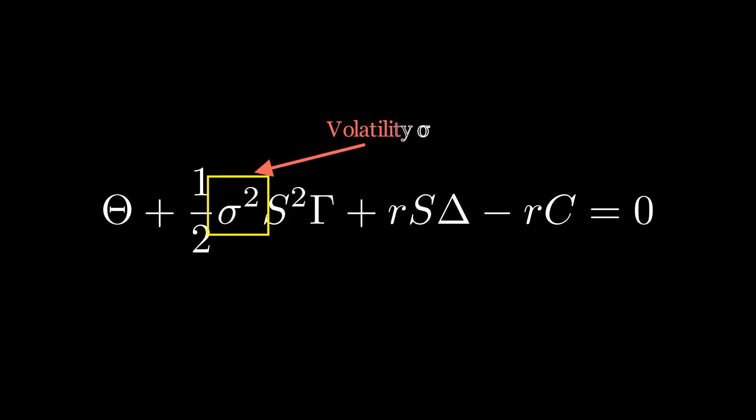There's also volatility. Represented by the Greek letter sigma, it is the standard deviation of the assumed log-normal distribution, showing how the stock price's movements affect the rate of delta changes.